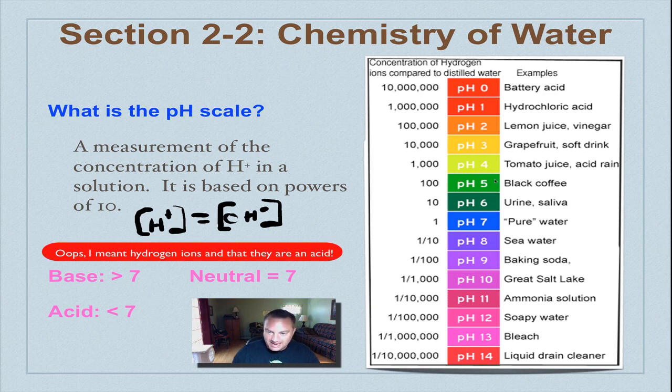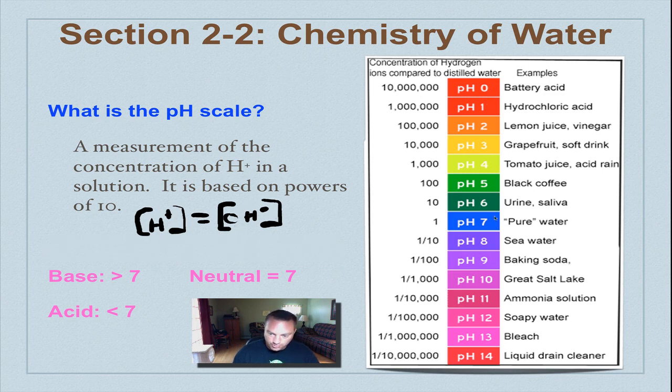If you have more hydroxide ions, you're going to move up the scale and you're going to be a base. Now this is a logarithmic scale, so just because you're a pH of 5 and you compare it to a pH of 10, the 10 isn't 5 times more. It works on exponents.